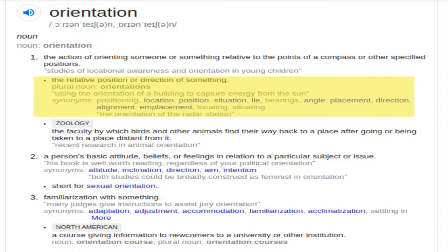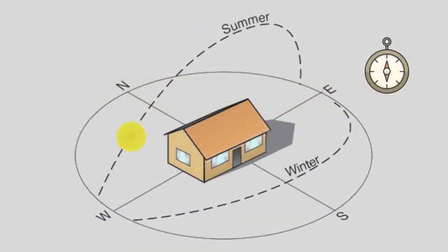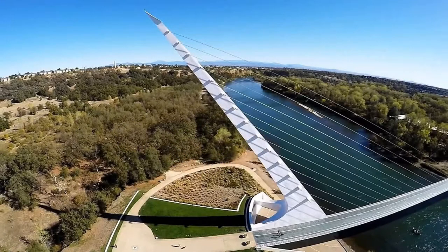That something is, in our case, a structure — an ancient monument. When we examine the orientations of ancient monuments in large quantities, we have discovered some amazing things. For example, using the orientation of a building to capture energy from the sun — that is of course true, but it is also very limited.